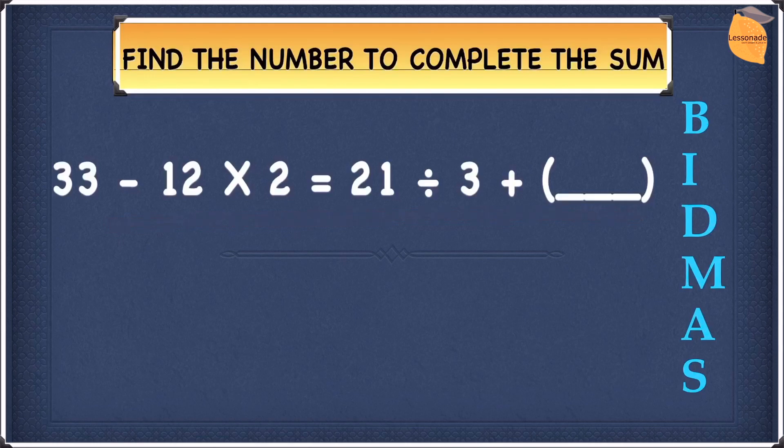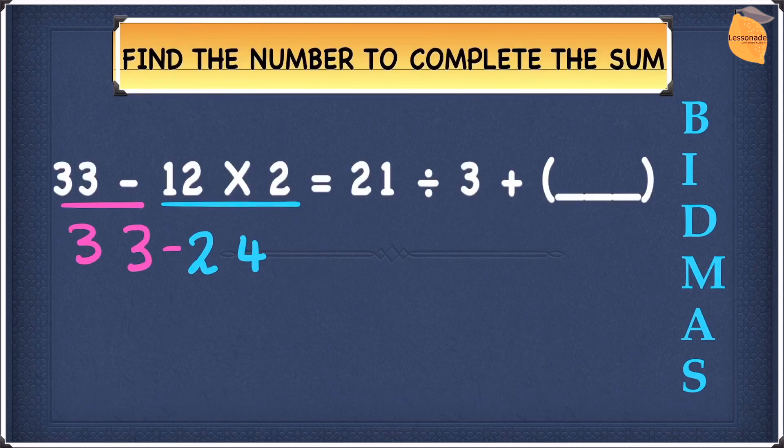In this question, let's work out the left hand side first. We have subtraction and multiplication. Since multiplication is higher up than subtraction in BIDMAS, we do it first, then the subtraction. This means we will do 12 times 2 first. 12 times 2 gives you 24. Then we can bring down the 33 minus. 33 minus 24 gives you 9. So the answer we got for the left hand side is 9.